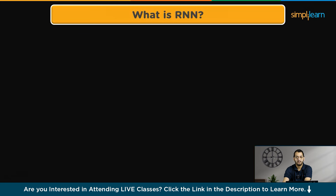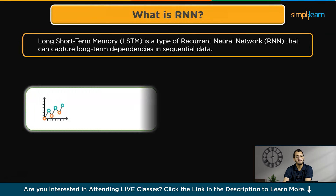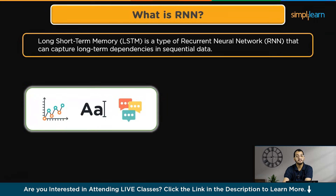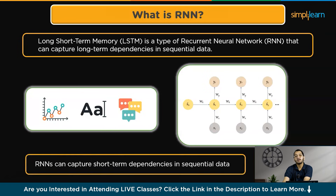RNNs are a type of neural network designed to process sequential data. They can analyze data with temporal dimensions such as time series, speech, and text. RNNs do this by using a hidden state passed from one time step to the next. The hidden state is updated at each time step based on the input and the previous hidden state. RNNs are able to capture short-term dependencies in sequential data, but they struggle with capturing long-term dependencies, which is why LSTMs were created.